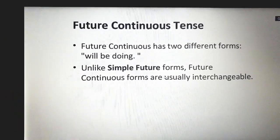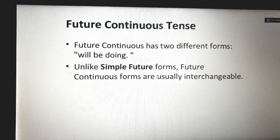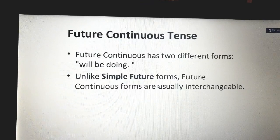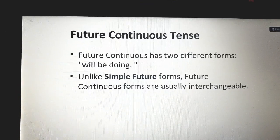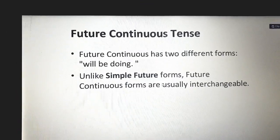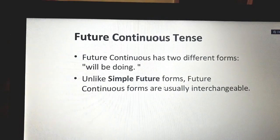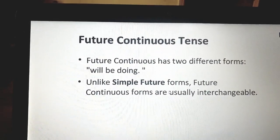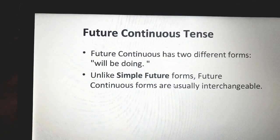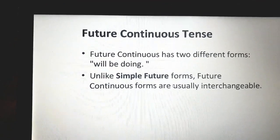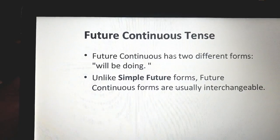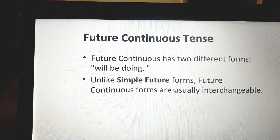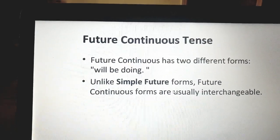Unlike the future simple forms, the future continuous forms are usually interchangeable — meaning they can vary. In the future simple, will or be going to is always directly followed by the base form of the verb. But in the future continuous, it is going to be different. Let's see how to form the future continuous.